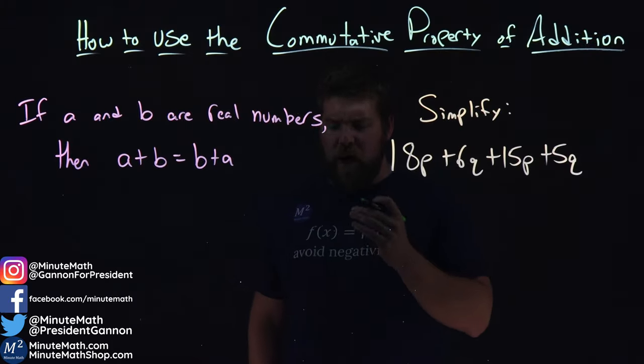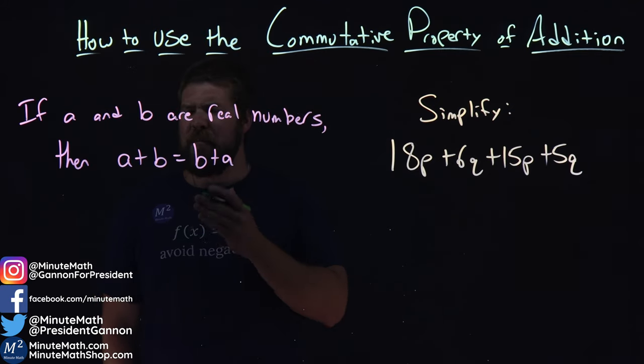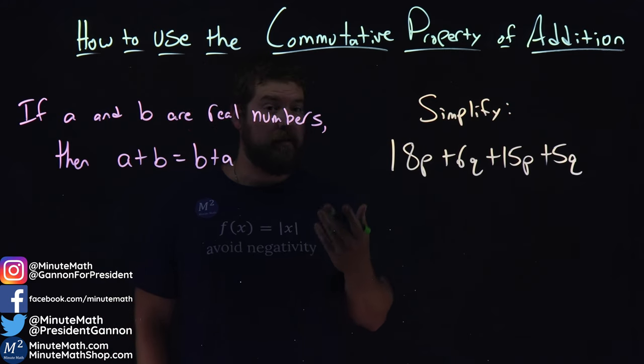The commutative property of addition is as follows. If A and B are real numbers, then A plus B equals B plus A.